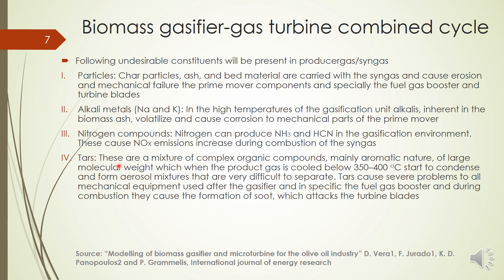The ash of biomass contains alkali materials — oxides of sodium, potassium, etc. — which cause corrosion of mechanical parts of the prime mover. If air is used for gasification, the large amount of nitrogen present can react with hydrogen to form ammonia, HCN, and other NOx emissions at high temperature, which must also be eliminated. Another important contaminant is tar — a mixture of complex, high-molecular-weight aromatic organic compounds. When the gas is cooled to between 350 and 400°C, tar starts to condense into liquid form and is very difficult to separate.